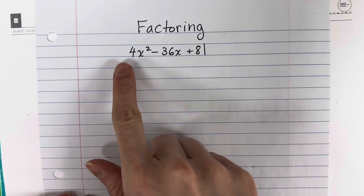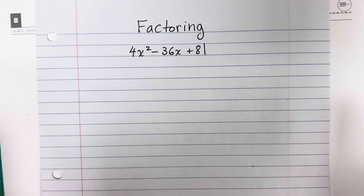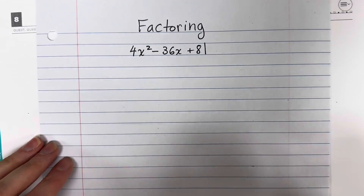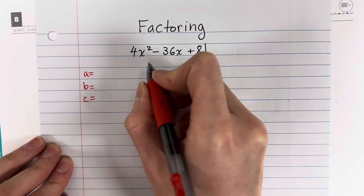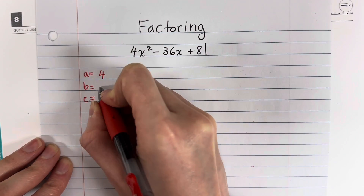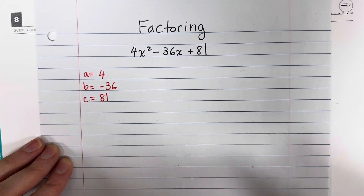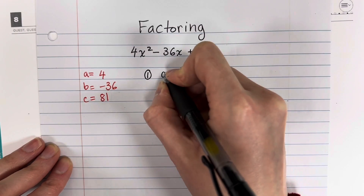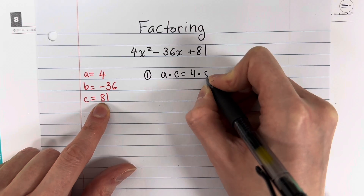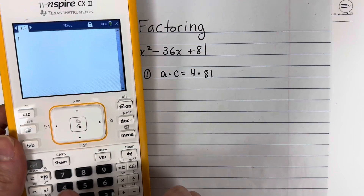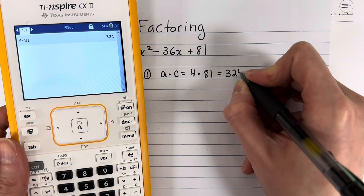Now I'm going to show you how to factor this using the factoring by grouping method. We start with A, B, and C: A is 4, B is negative 36, and C is 81. Step one: multiply A times C. 4 times 81, put that in the calculator — that's 324. Now we need to find the factor pairs of 324.